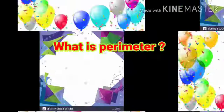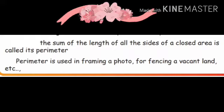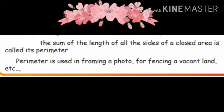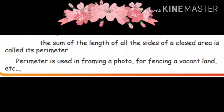What is perimeter? The sum of the length of all the sides of a closed area is called its perimeter.